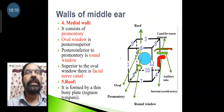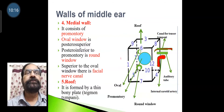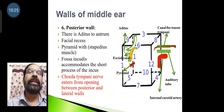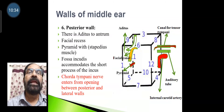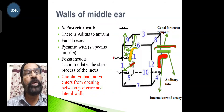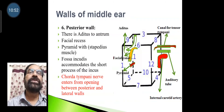The roof is formed by a thin bony plate called the tegmen tympani. The posterior wall contains the aditus to the antrum, the facial recess, the pyramid with the stapedius muscle, and the fossa incudis, which accommodates the short process of the incus. The chorda tympani enters from the opening between the posterior and lateral walls.